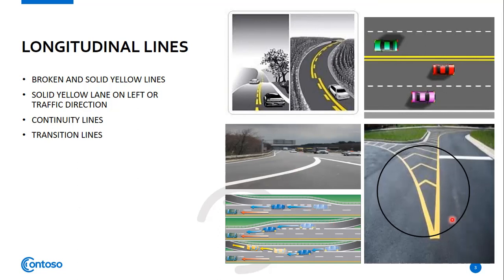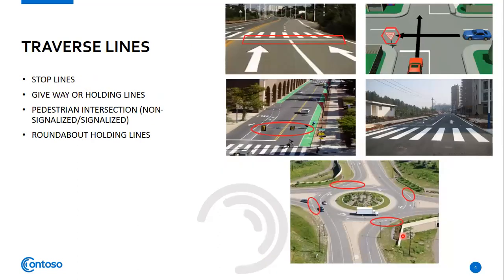Another longitudinal line is the transition line. These are used to guide traffic safely past obstructions on roadways, such as islands or medians. They also indicate changes in the width of the traveled portion of the roadway, including an increase or reduction of a traffic lane.